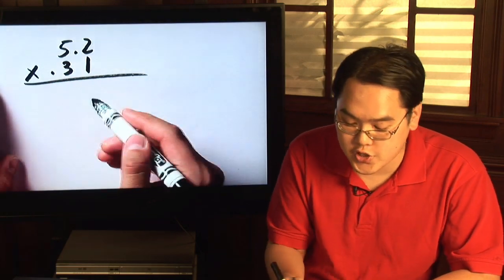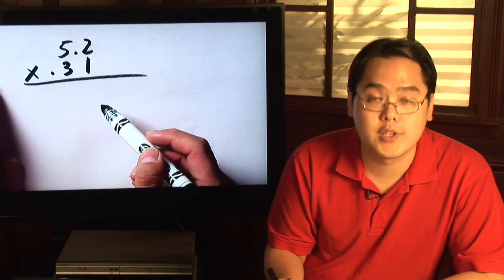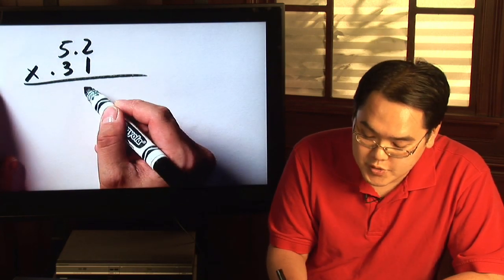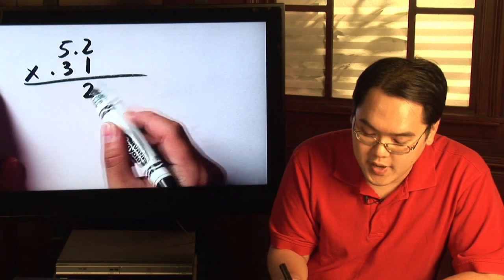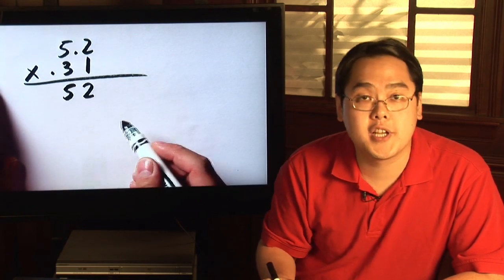So here's where the multiplication starts. Just like you would normally, multiply the 1 by the two numbers up top. 1 times 2 is 2, and 1 times 5 is 5. Don't worry about the decimals until the very end.